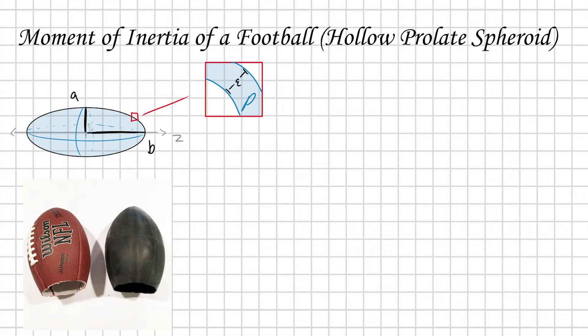A football can be reasonably approximated as a prolate spheroid. If I took a sphere of radius A and stretched out one of the axes out to B, that would be an example of a prolate spheroid.